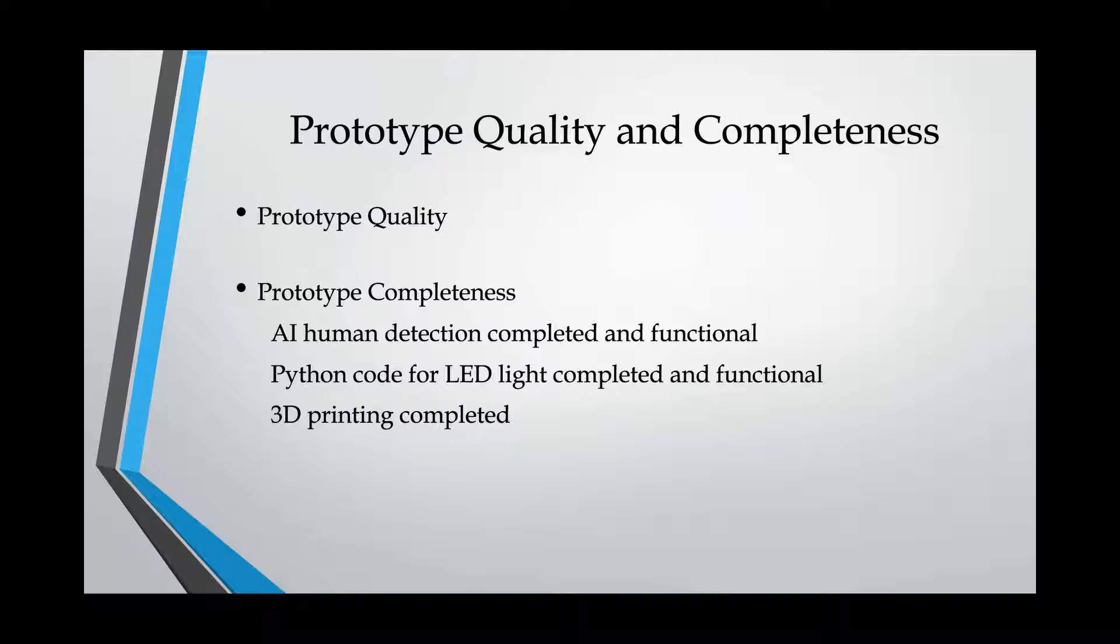So for our prototype quality and completeness, the quality is satisfactory. There are some parts of the design that could use a little more work. For example, the casing has some aesthetic flaws, but it is still functional. As for completeness, we were able to get our AI module to detect humans. We were able to code an LED to turn on when a human is detected. And we were able to complete our 3D printed casing.